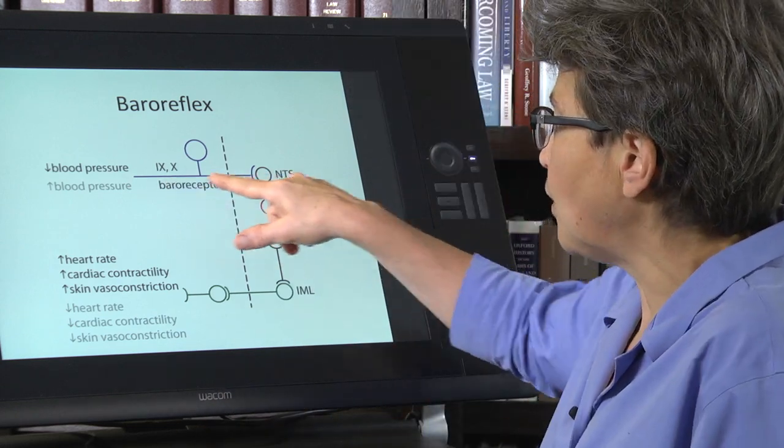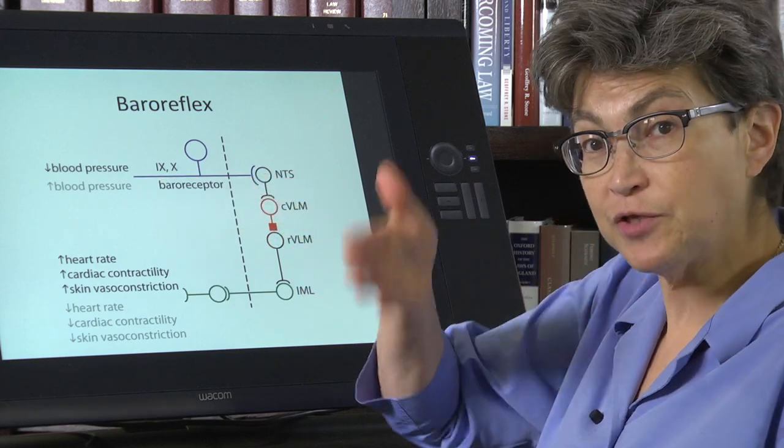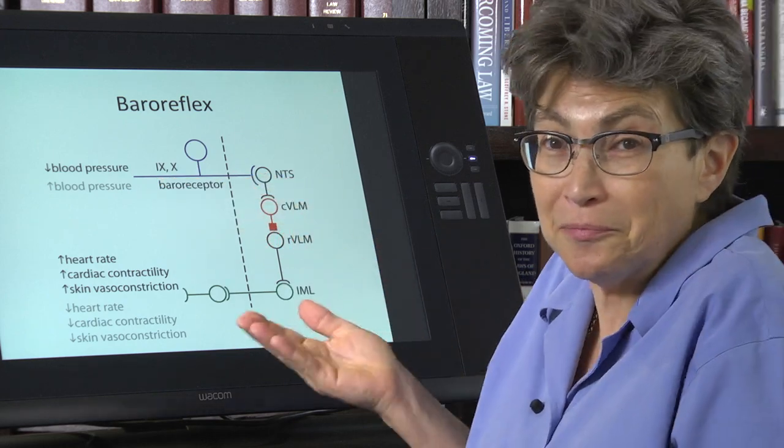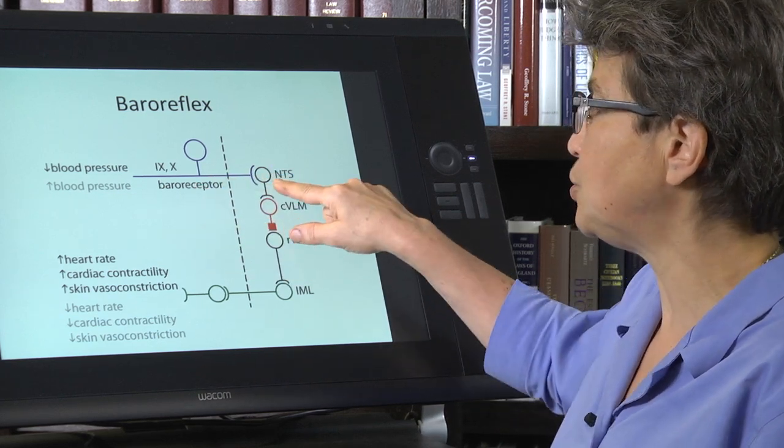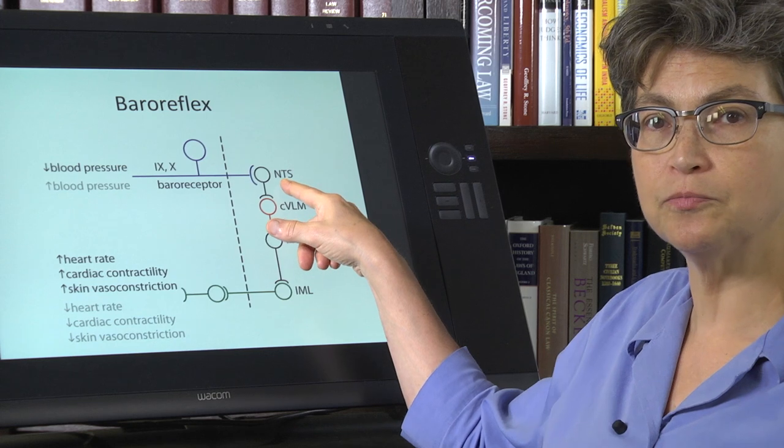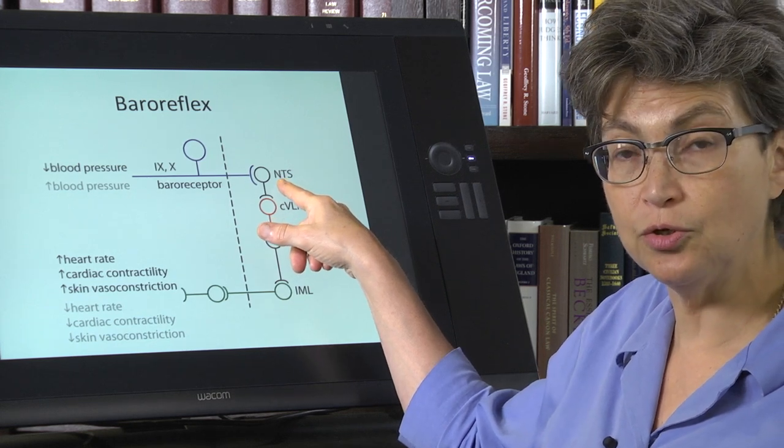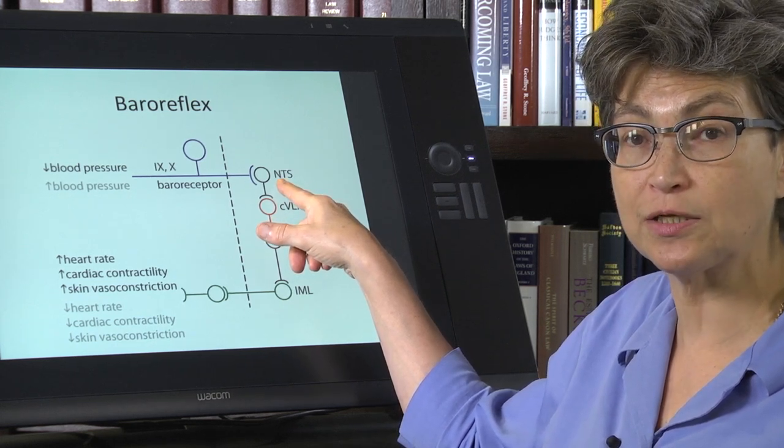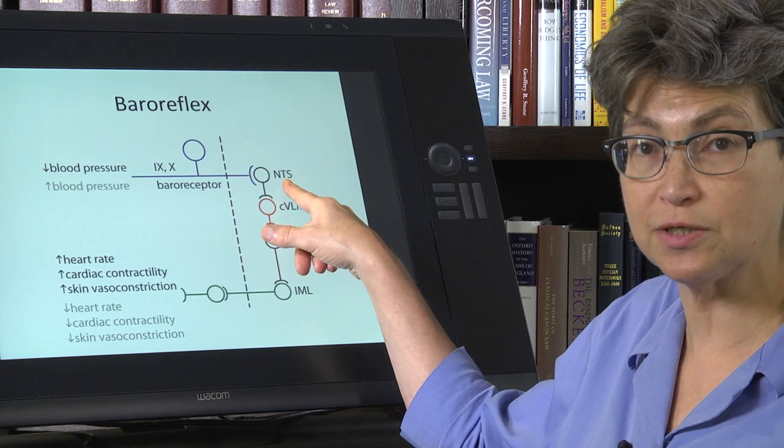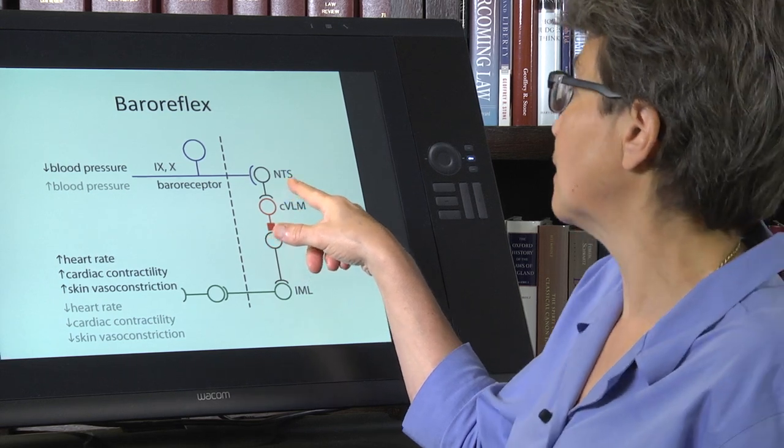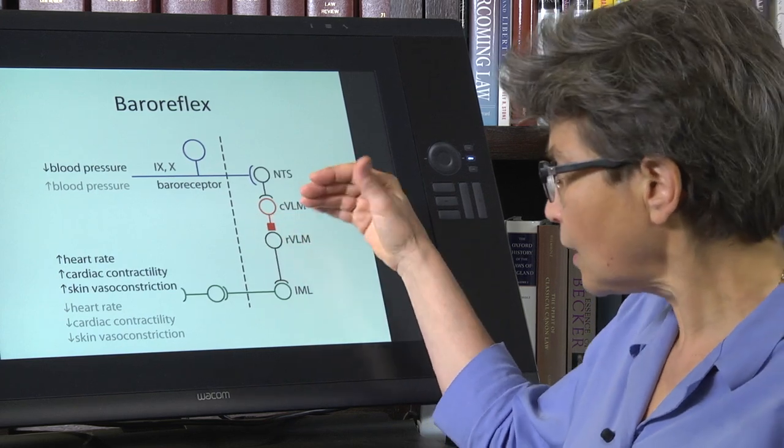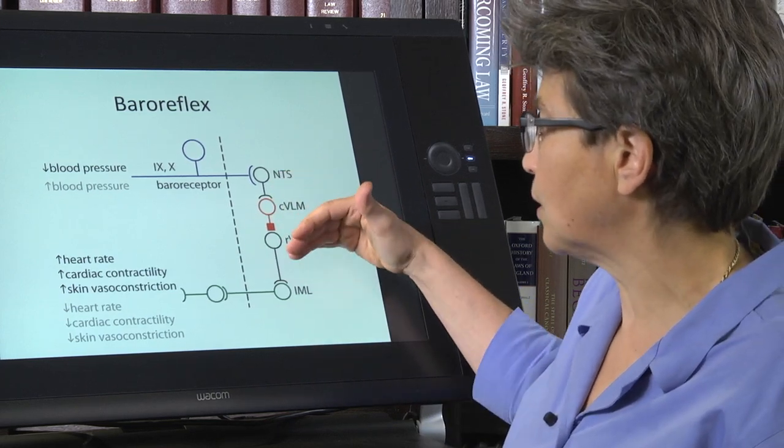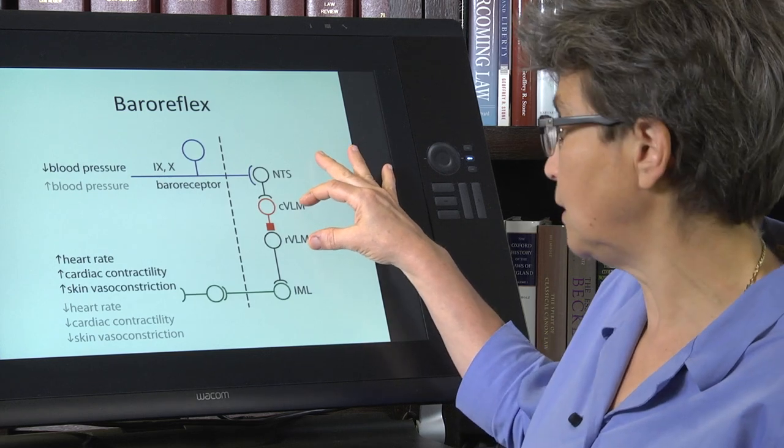Information from these baroreceptors, and they have tonic activity, there's tonic pressure in the blood vessels. This reaches our viscerosensory nucleus, the nucleus of the tractus solitarius, or nucleus of the solitary tract, commonly abbreviated as NTS, which then is relayed through a couple of different areas in the ventral lateral medulla.